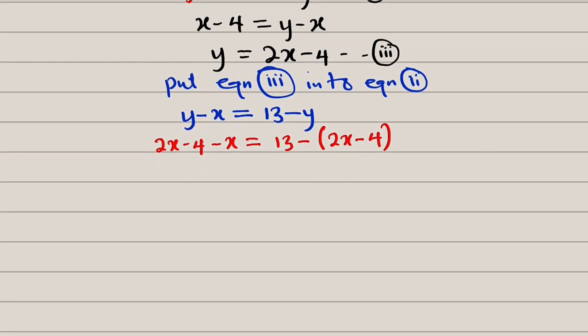Let us simplify this. 2x minus x is single x. So we have x minus 4 to the left. And to the right, we can expand the bracket, 13 minus will affect every term here.